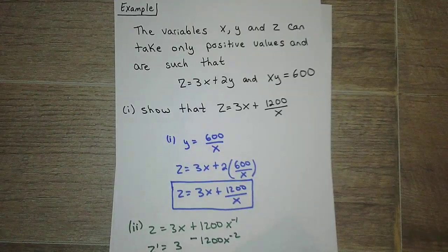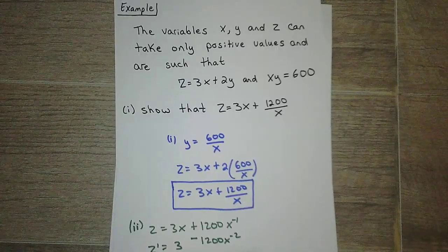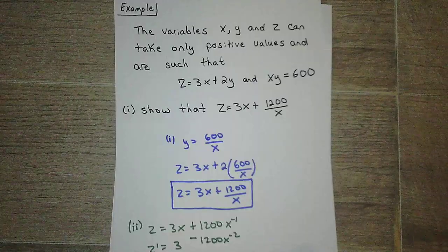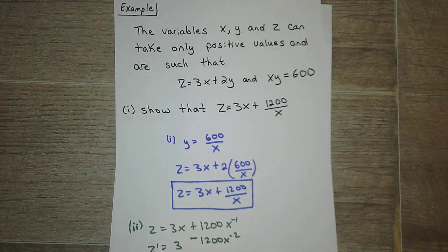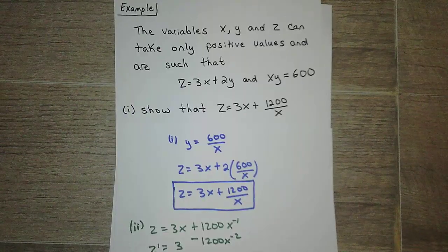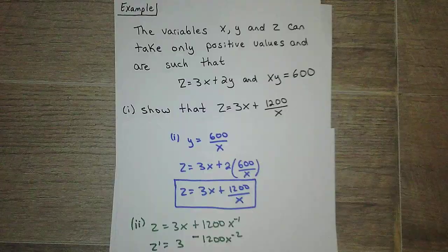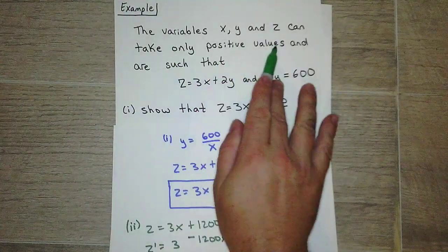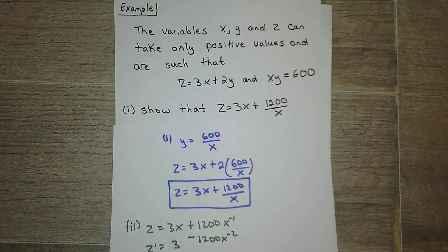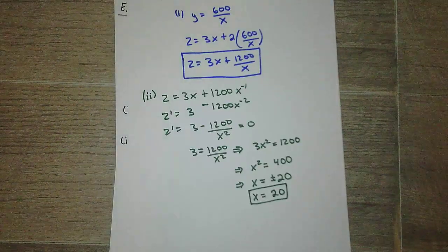Okay, so now we set that equal to 0 and we solve it for x. This term here is negative, I'm going to add it to the other side. I got to get this x squared out of the bottom, so I'm going to multiply it over. Divide it by 3, and then take the square root of each side: plus or minus 20. Now it says x, y, and z can only be positive, so I can rule out the negative. So it's just going to be positive 20. Okay, so hopefully you did that. Check your work with this work.